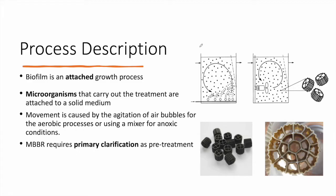The MBBR is a secondary treatment. The primary treatment is usually a clarifier where particles settle down, forming sludge, with significant removal of total suspended solids and some reduction of BOD. The wastewater is then transferred into the secondary treatment, which in this case is the MBBR. The MBBR can consist of many reactors, whether aerobic, anaerobic, or anoxic.